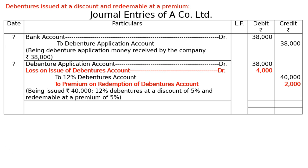Rs. 2,000. Being issued Rs. 40,000, 12% debentures at a discount of 5% and redeemable at a premium of 5%. And totalling of the journal will be Rs. 80,000, both debit and credit sides. And this is the final answer.